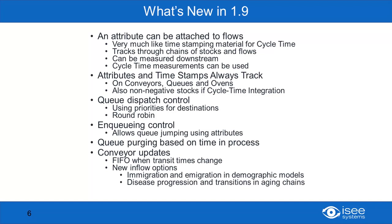There are also some conveyor updates new in 1.9 which I'm not really going to talk about here: we have FIFO, which allows the conveyor to act more like a physical conveyor belt when transit times change, and some new inflow options which really open up the door for more accurate modeling of immigration, emigration demographics, and disease progression and transitions in aging chains. We will have another webinar scheduled to go over those topics in late summer or early fall.